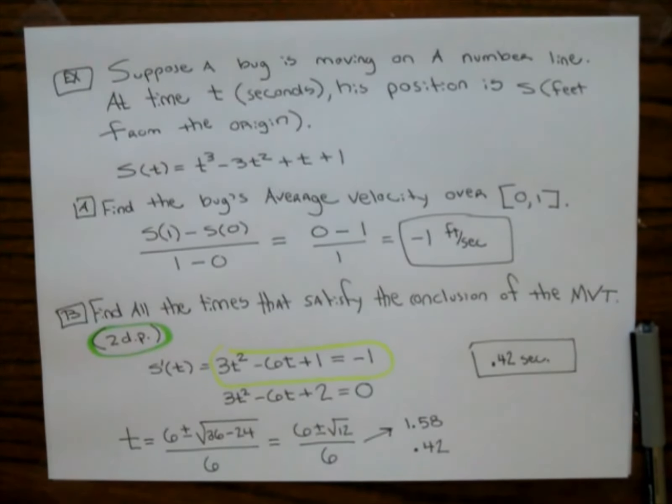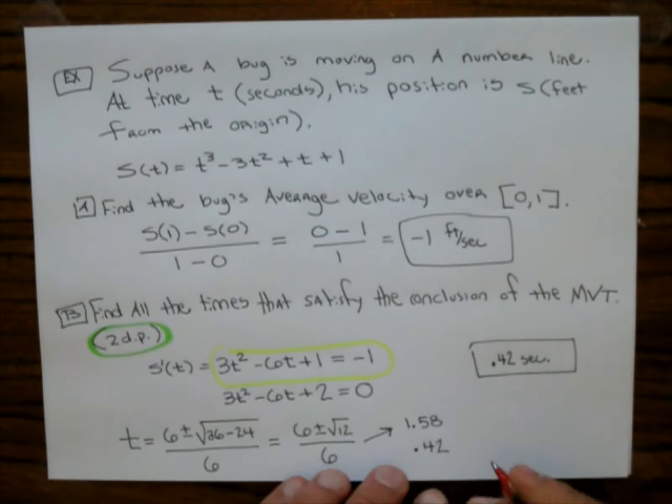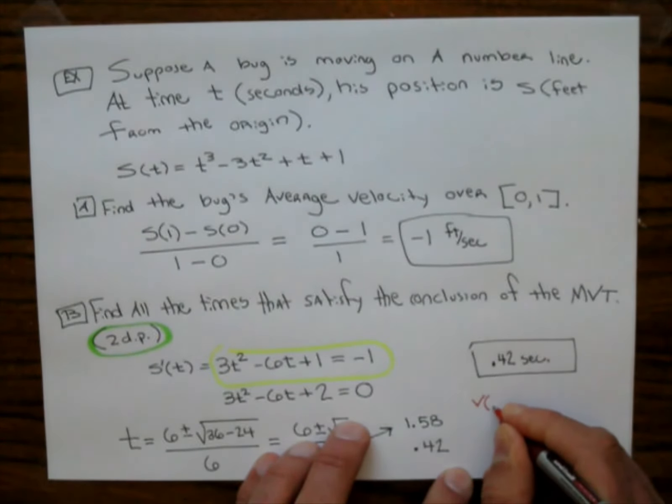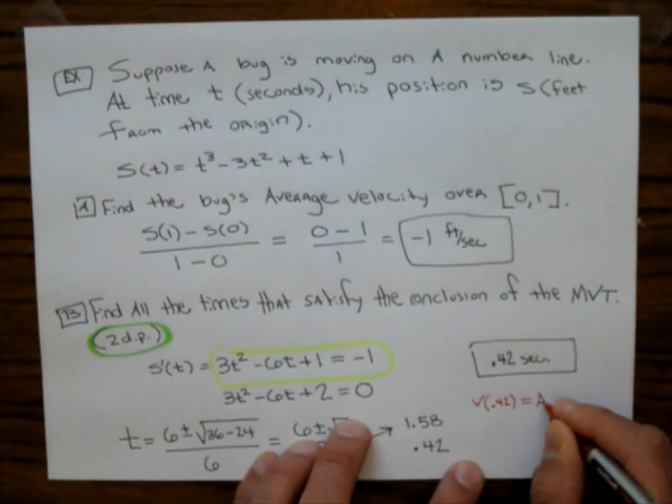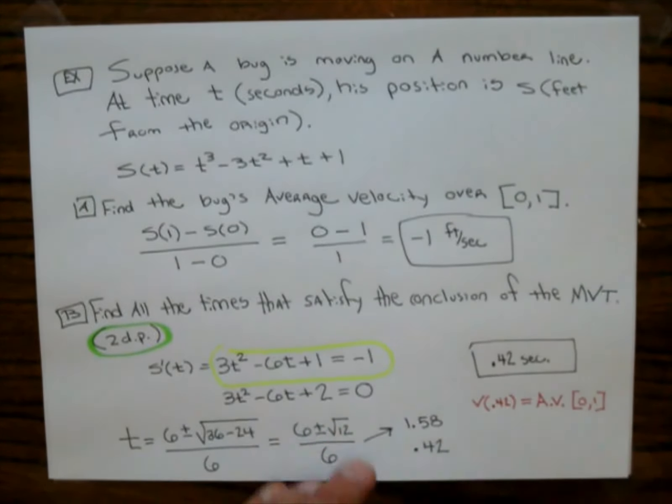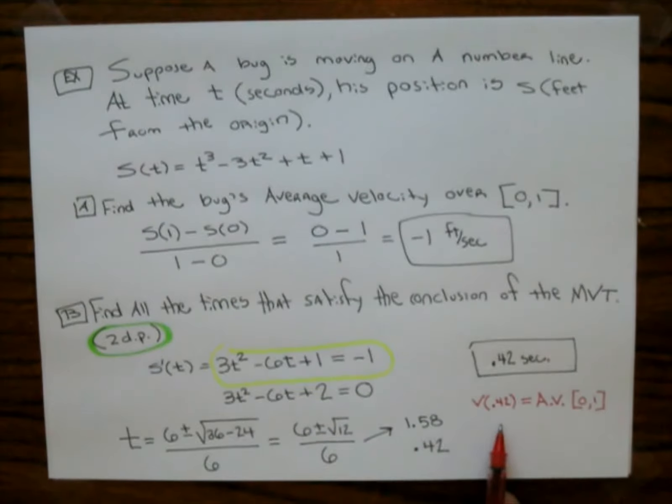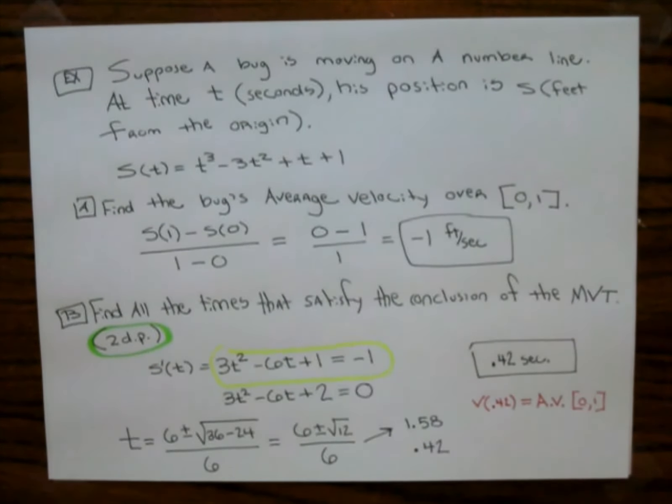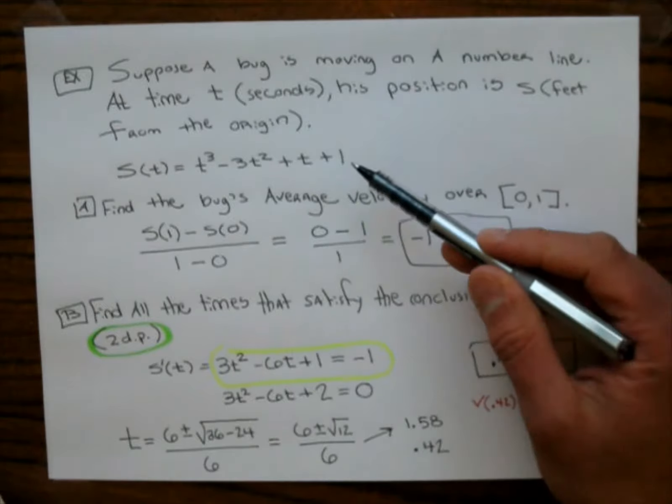Now, what is this really saying? It's really saying that the velocity at 0.42 is equal to the average velocity over the time interval. That is what the mean value theorem says. And we were able to find a time. Now, we're done with this problem. But what I'm going to do is I'm going to show you the visual on this. I'm going to go ahead and graph this.